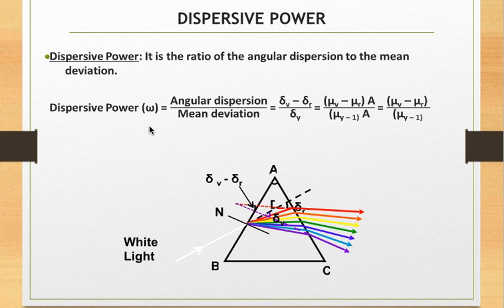That's why for spectral studies we make use of dense flint, a type of glass which has higher dispersive power. However, for a spectacle lens, the colors should not be separated, so the lens material should always have a low dispersive power.